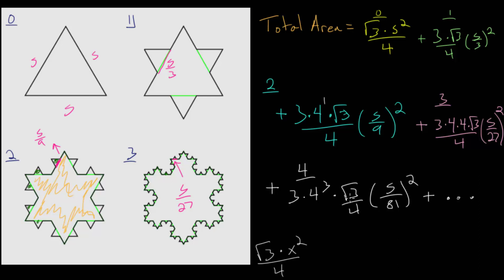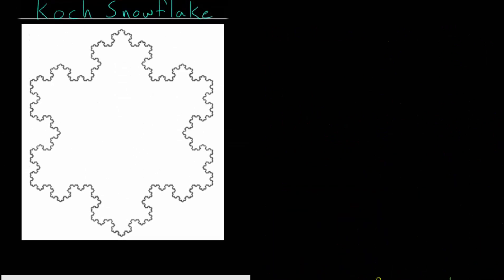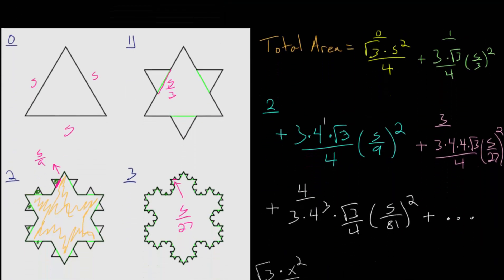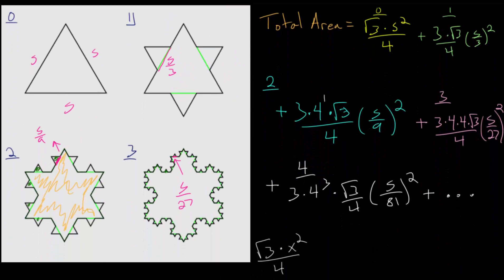Hopefully we can come up with a nice simplified formula where if we know the side length of the original equilateral triangle, we can just plug in that value to find the area of the entire Koch snowflake. So let's start with this formula we found and simplify it a little bit.